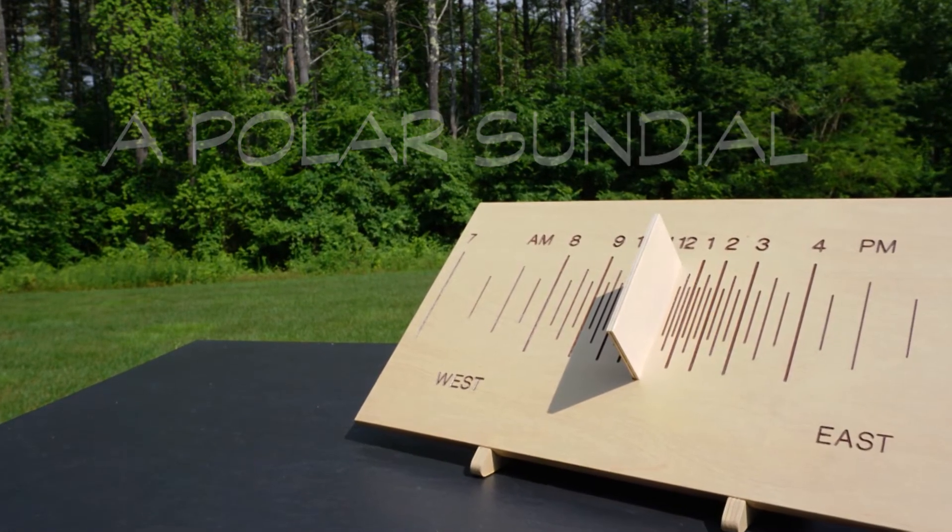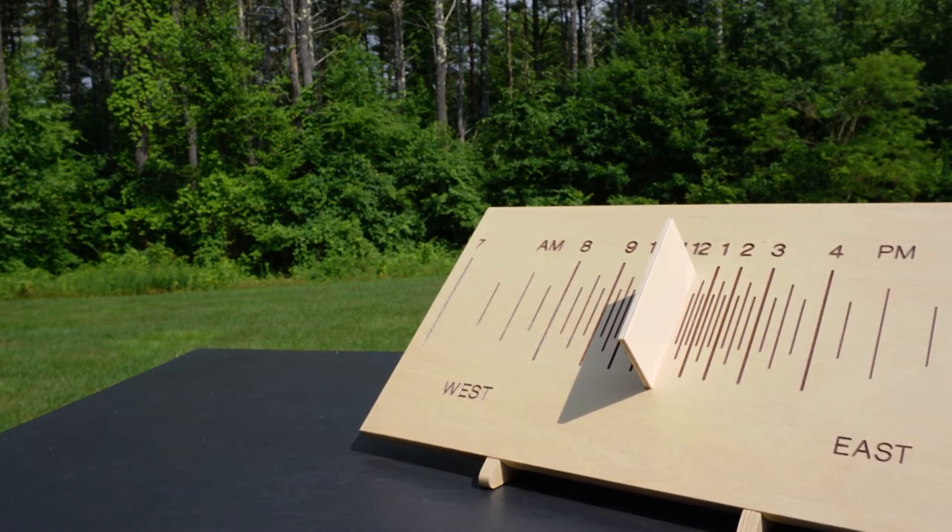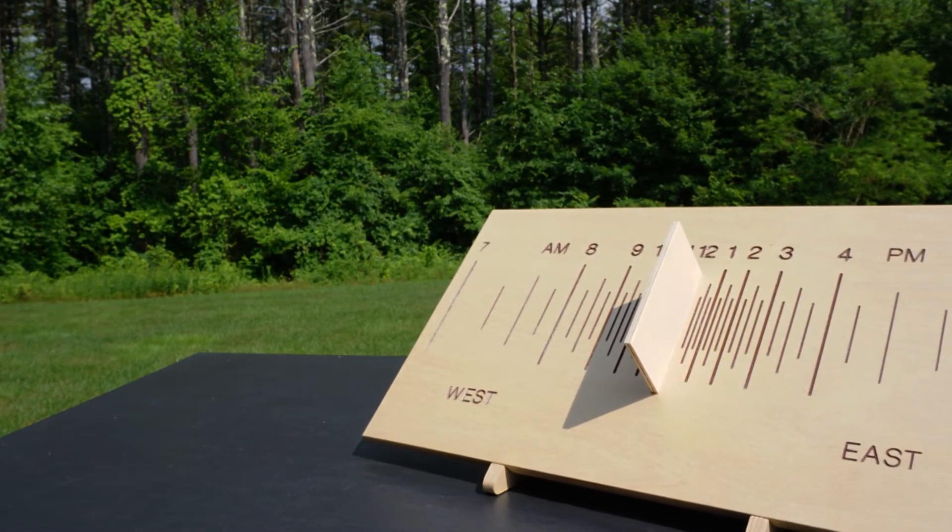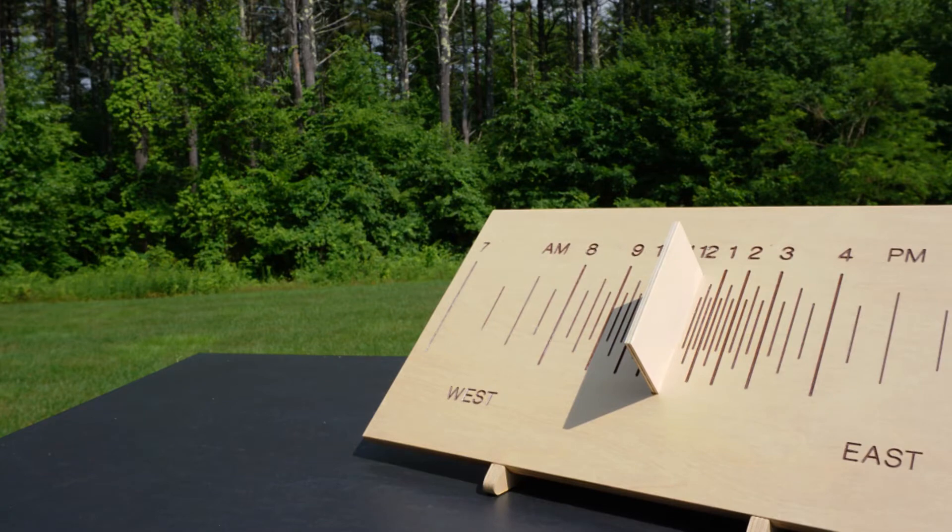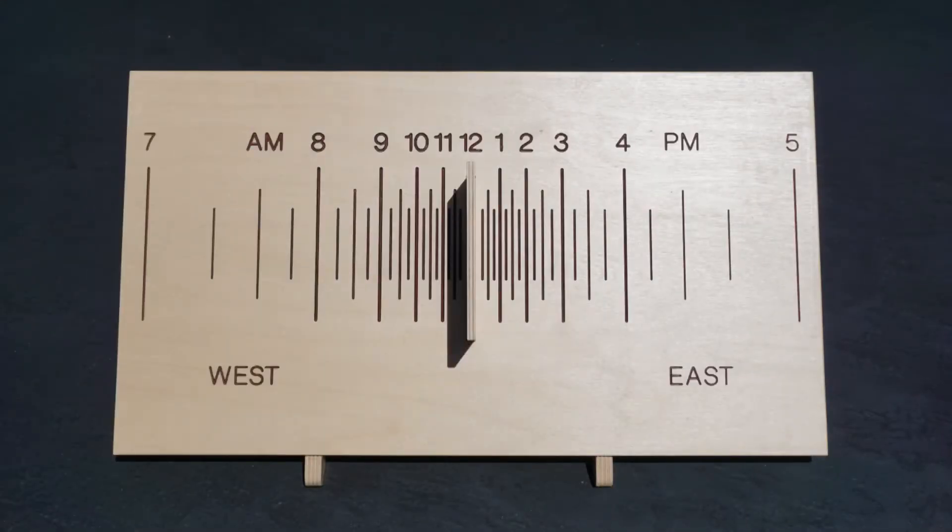The polar sundial is one of the universal dials. That means when one is properly constructed, it can be used anywhere on Earth. This type of sundial can be recognized by its parallel hour lines that are read from west to east.